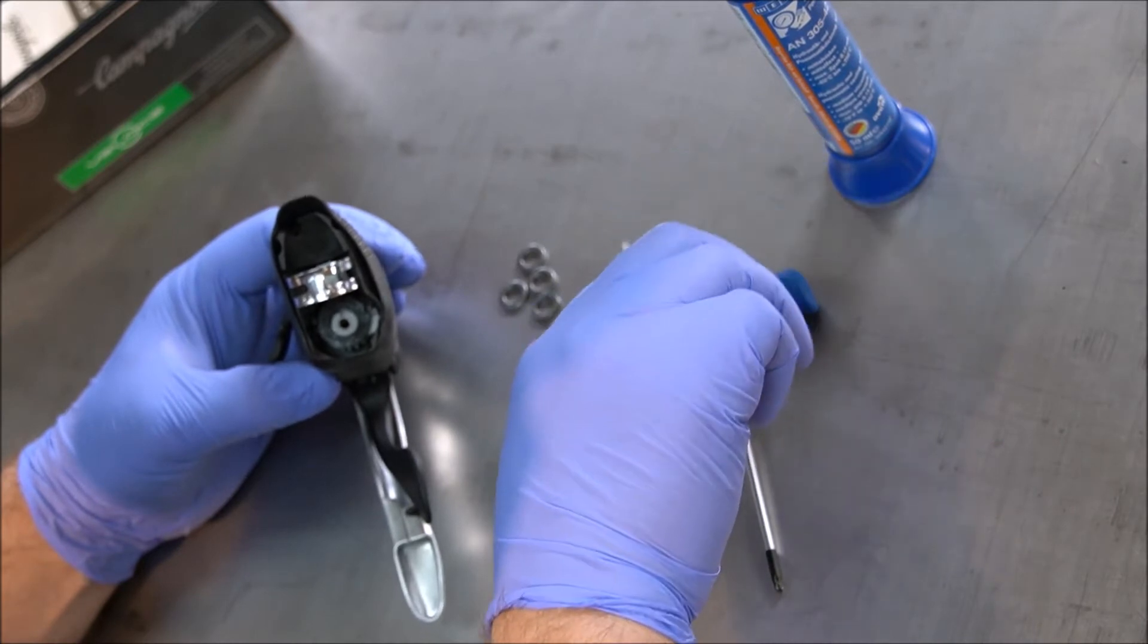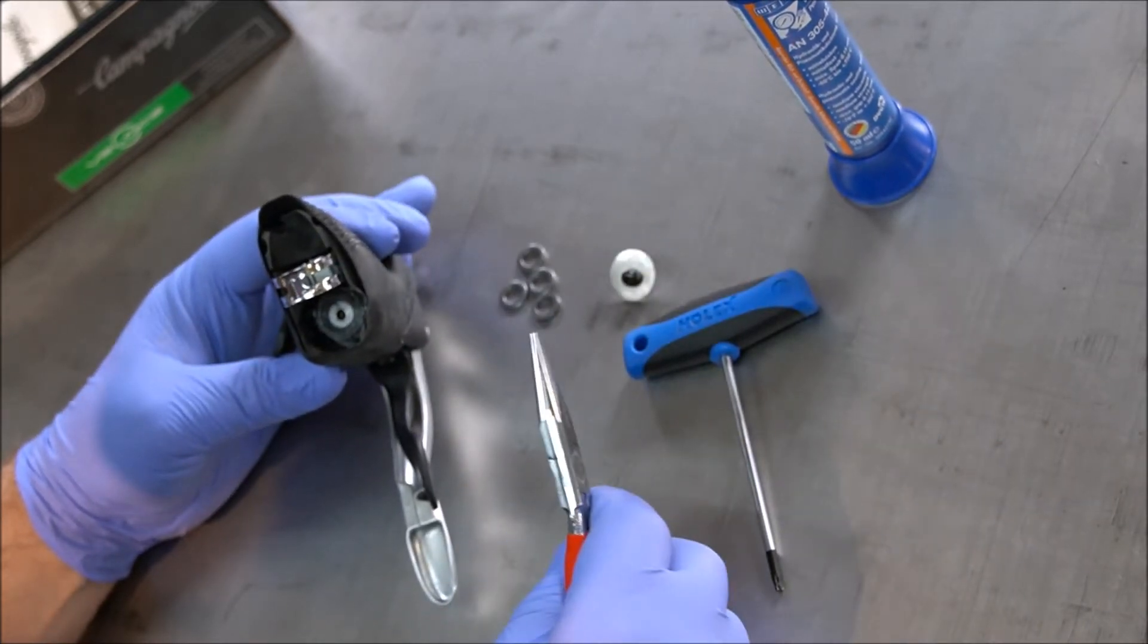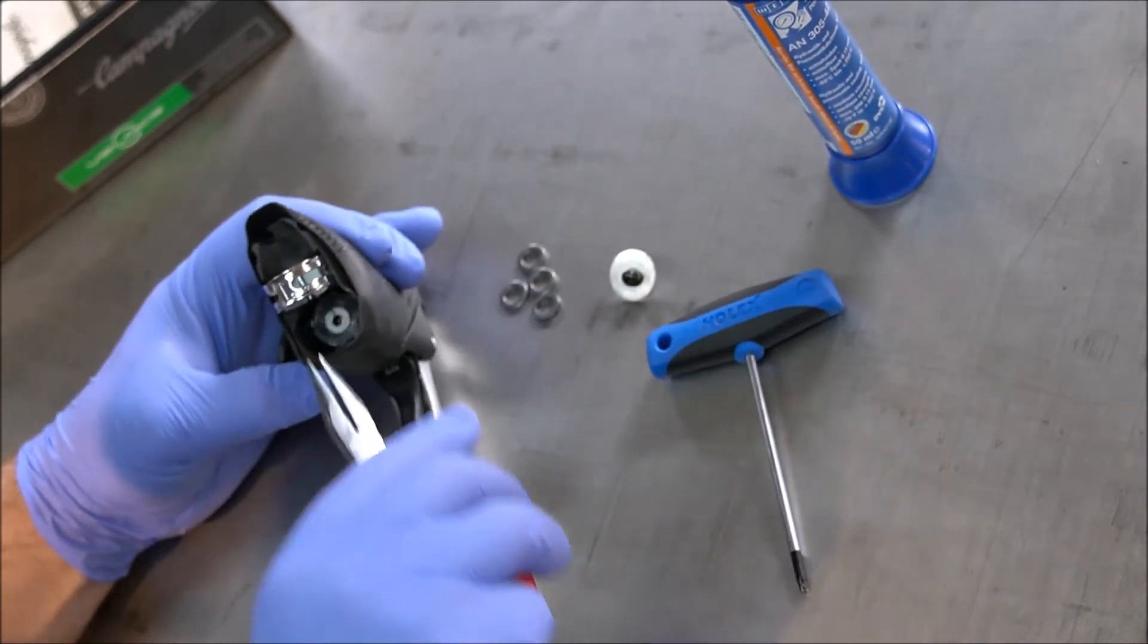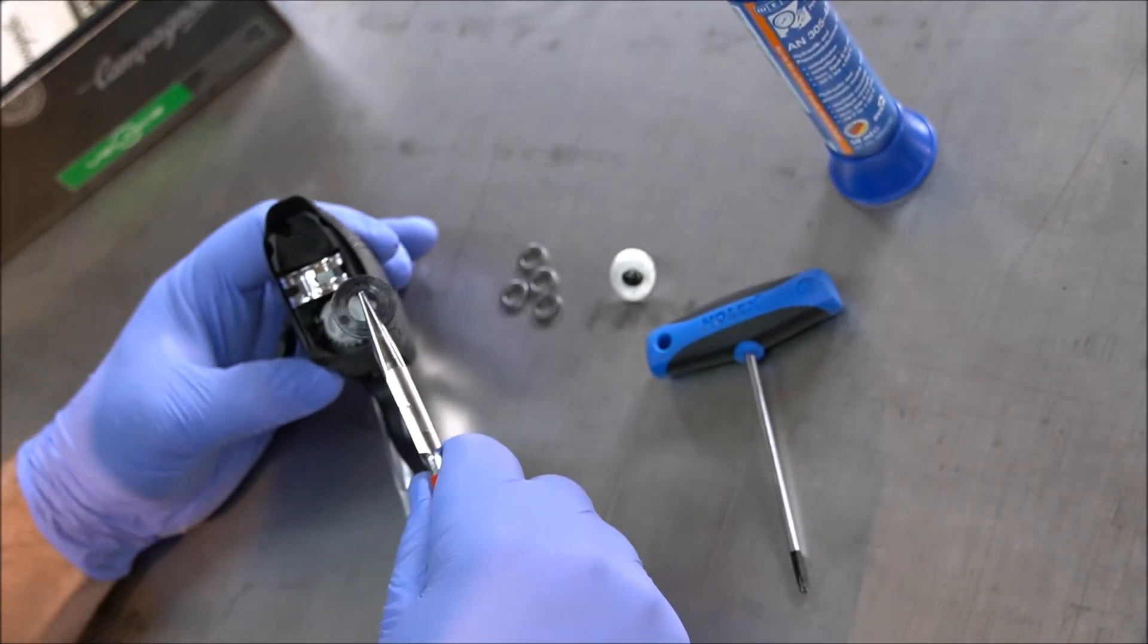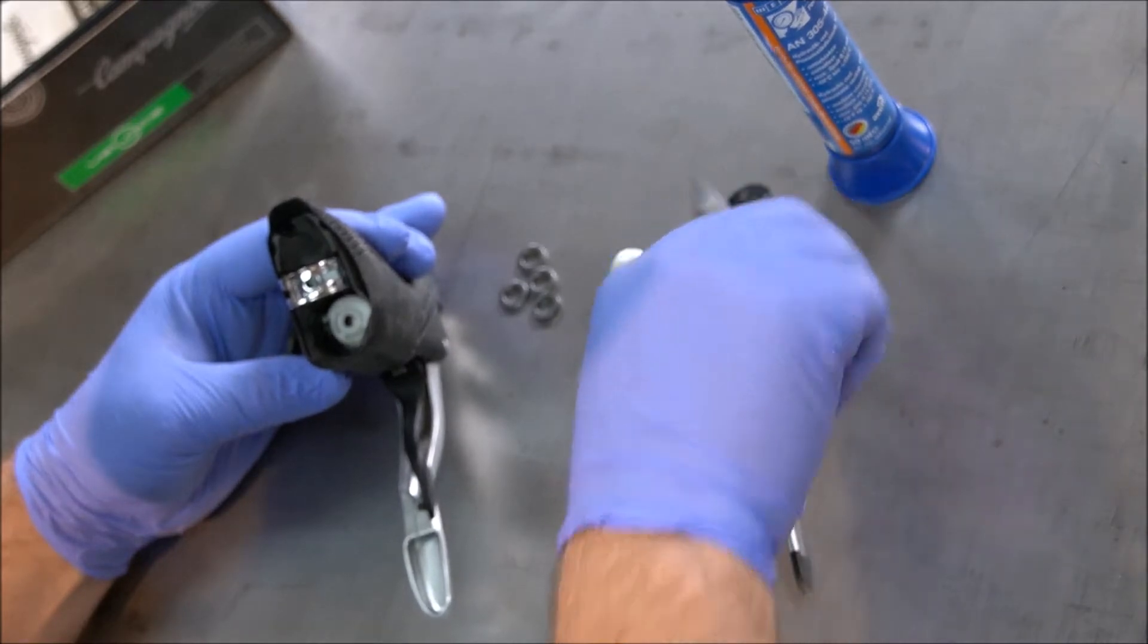You can take both washers, the small one and the big one, together with the screw out. Then you see the return spring. Take it out. It's not needed anymore.